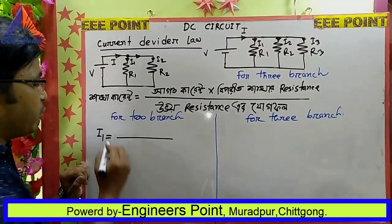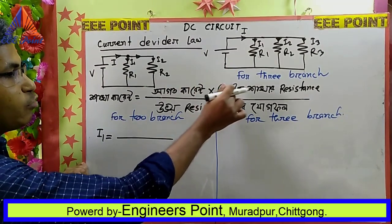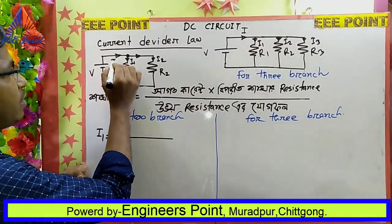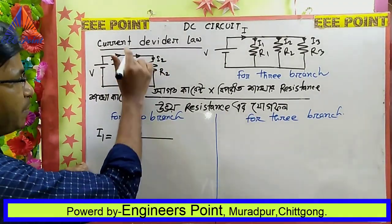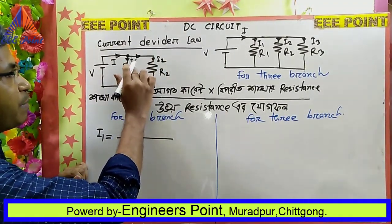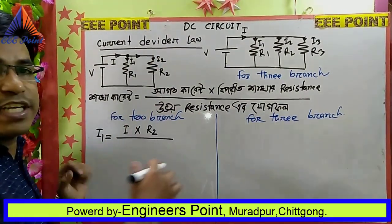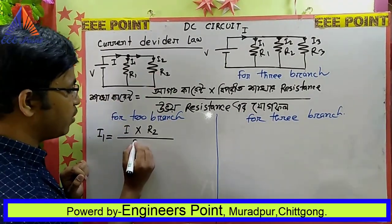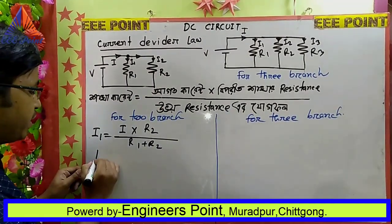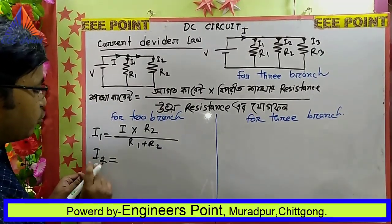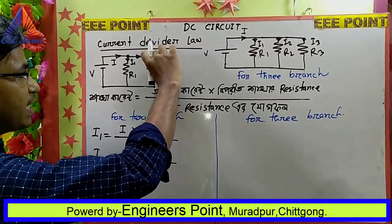R2 divided by the total resistance. The total resistance is equal to R1 plus R2. If I2 is equal to R2 over the total resistance, and I1 is expressed similarly.